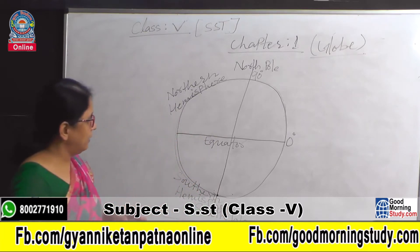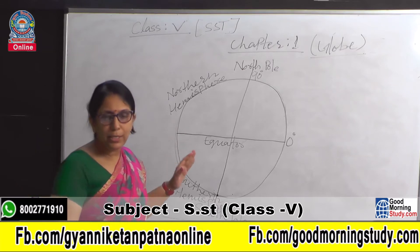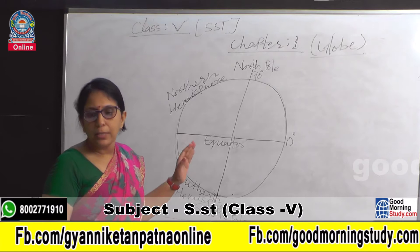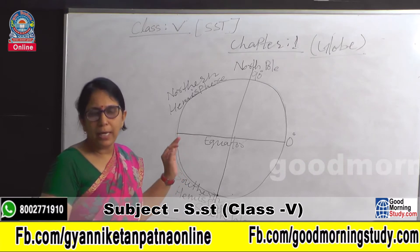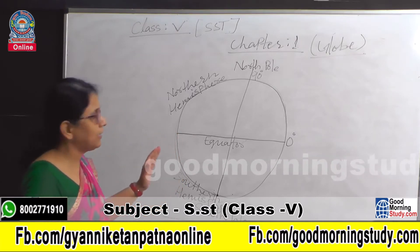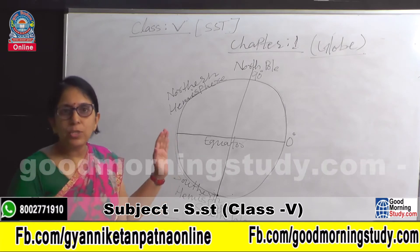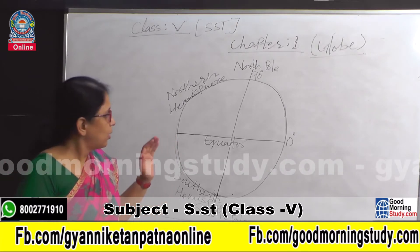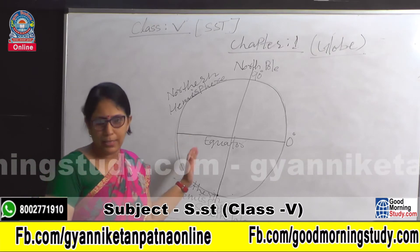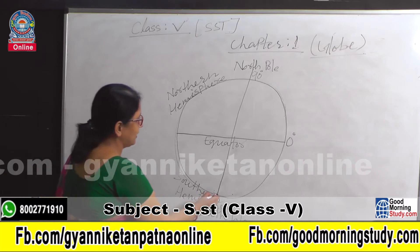You can see any countries, oceans, and continents on the globe. The actual size of the countries, oceans, and continents you can see in the globe. Globe is a true model of the Earth and it always spins on its axis.